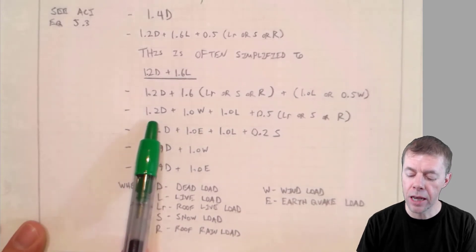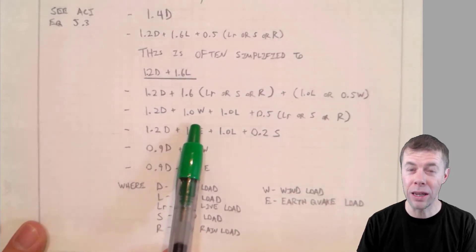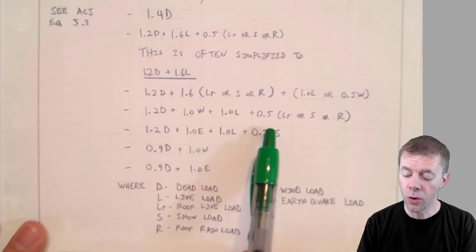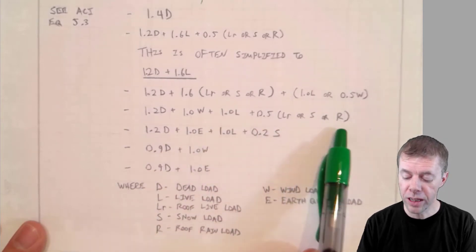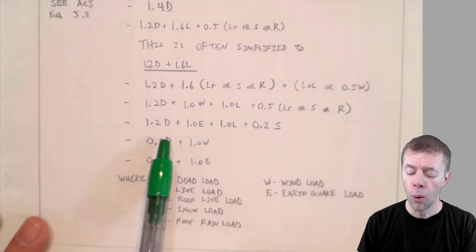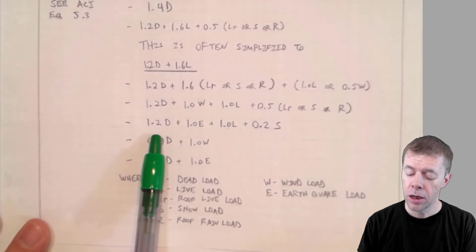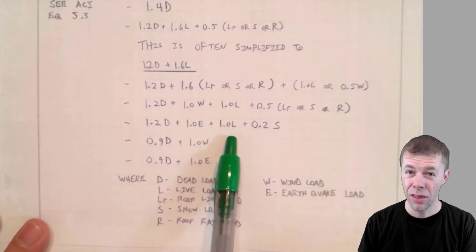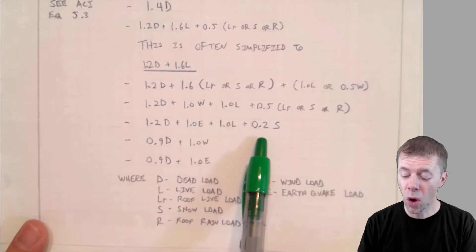Let's keep going. This is interesting. 1.2 dead, plus all of the wind, plus all of the live load, plus only half one of these. Or, let's look at this. 1.2 dead, plus the earthquake, plus the live load, plus 0.2 of the snow.